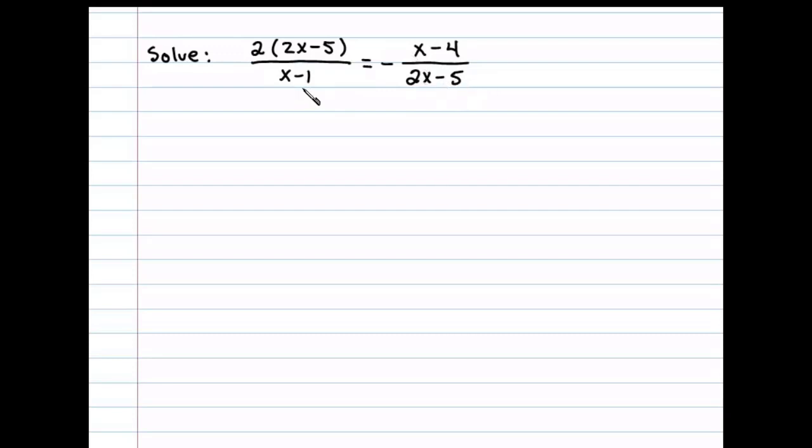But before we do that, let's determine the restrictions. To find the restrictions we set the denominators equal to zero. So in this case x minus 1 equals 0 tells me x equals 1 is a restriction. We can do the same thing with 2x minus 5, setting that equal to 0 we can see that x equals 5 halves is a restriction.